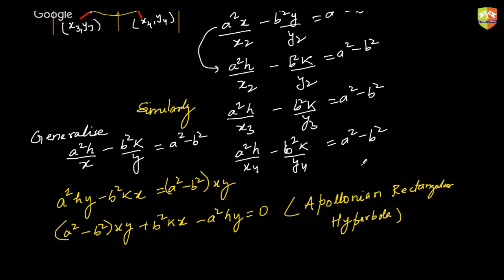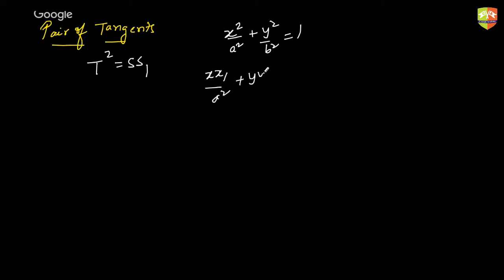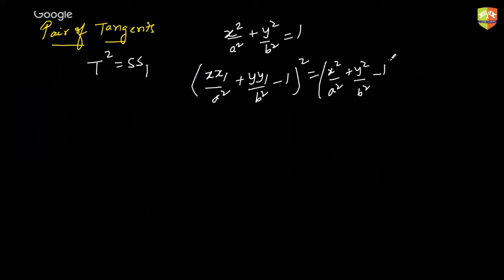Is that clear? This is one of the most difficult concepts you may come across — though it won't necessarily always appear. Now we'll talk about the concept of pair of tangents, just as we did for a circle. Remember: the pair of tangents equation is T² = SS₁, and for the standard form of the ellipse, T is xx₁/a² + yy₁/b² − 1, S is the ellipse expression, and S₁ is that expression evaluated at the point.